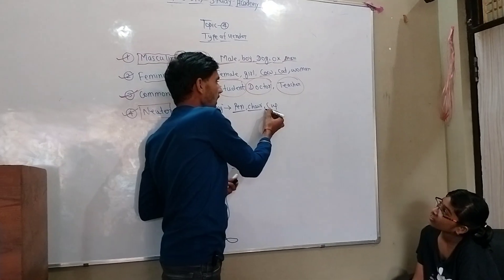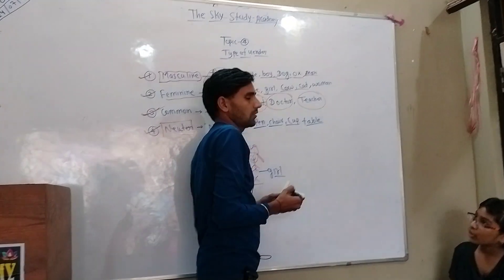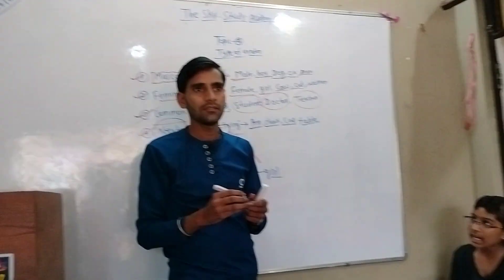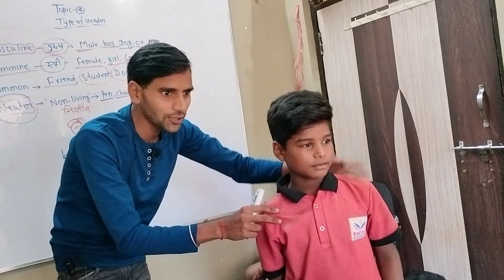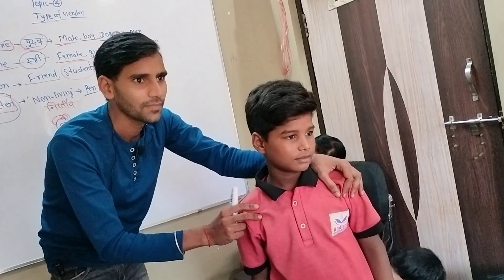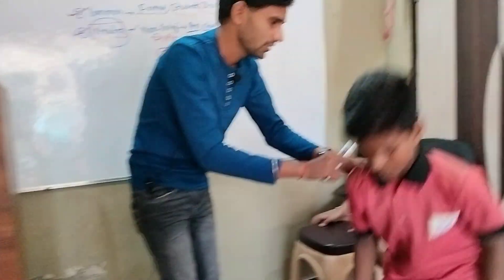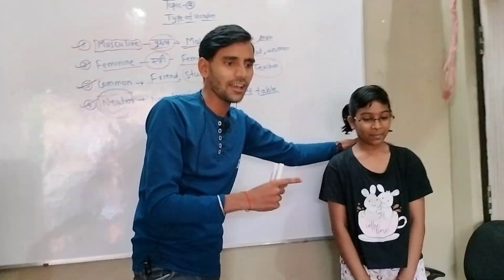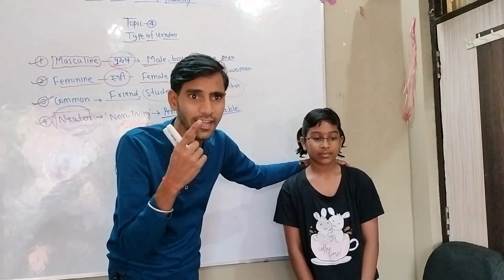My friends, tell me: pen, chair, cup, table — living or non-living? Non-living. So they are neuter gender. Now, stand up — he is a boy, so which gender? Masculine. Stand up — she is a girl, so which gender? Feminine.